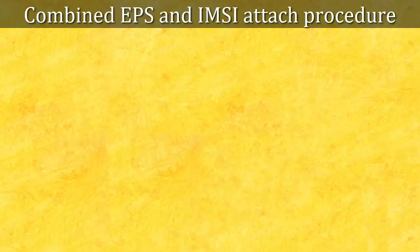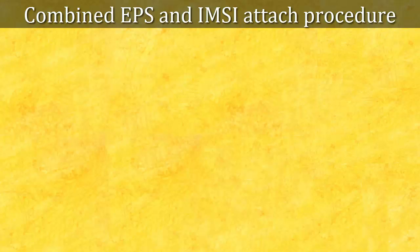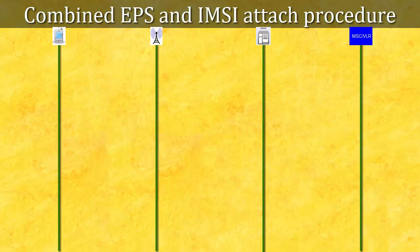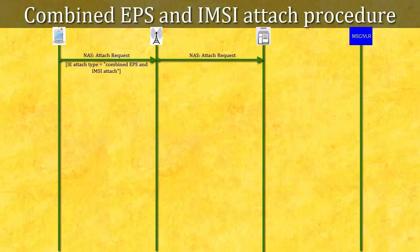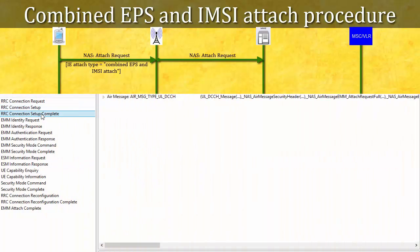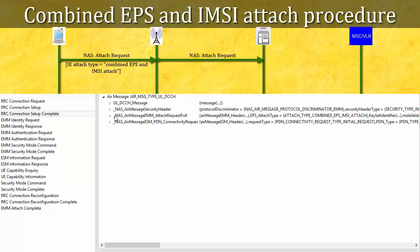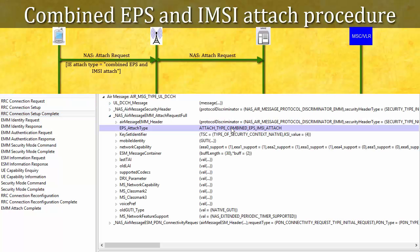We will go through the combined EPS and IMSI attach procedure and see how the SGS association is created. During the attach procedure, to register itself to the CS domain, the mobile should send attach type as combined EPS and IMSI attach in the attach request message — here EPS refers to PS domain and IMSI refers to CS domain. This is the attach request message from UE logs; you can see attach type is combined EPS and IMSI attach.